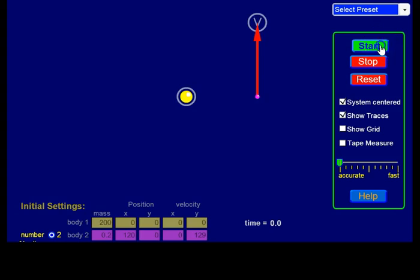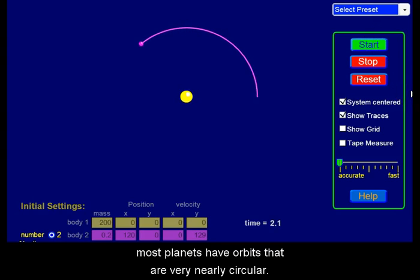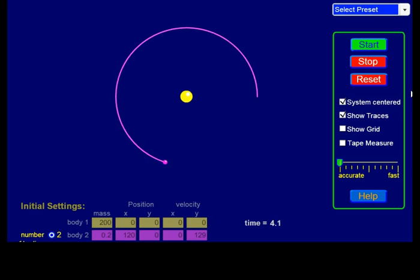Note that in the real Solar System, most planets have orbits that are very nearly circular. A circle is a special type of ellipse where the two foci are co-located.